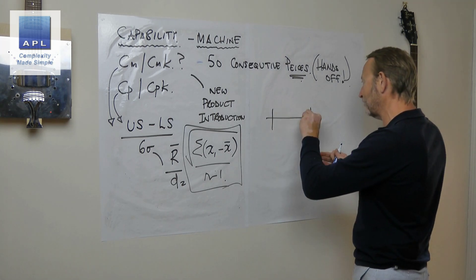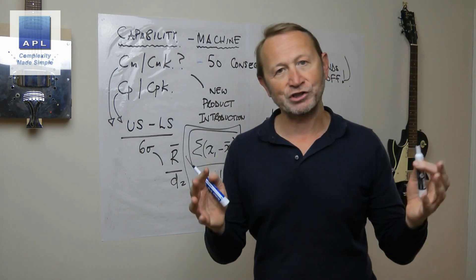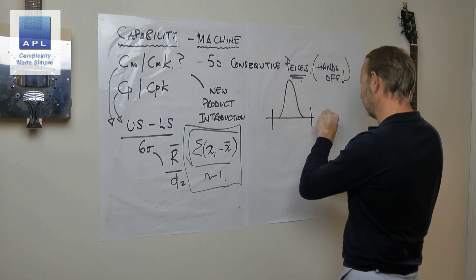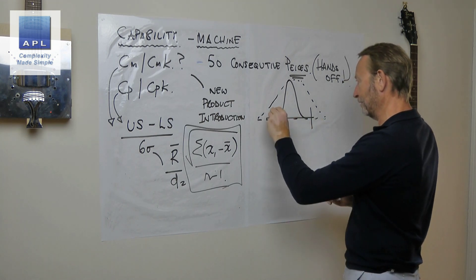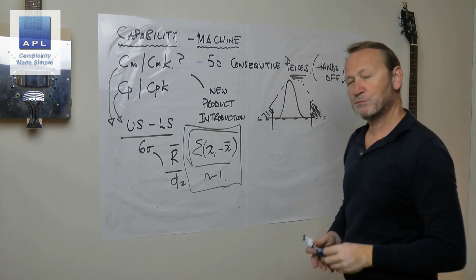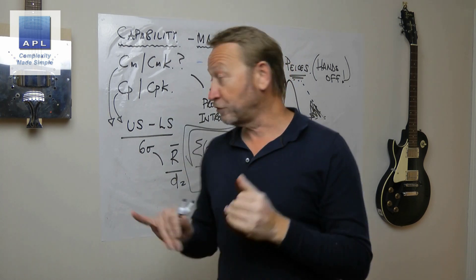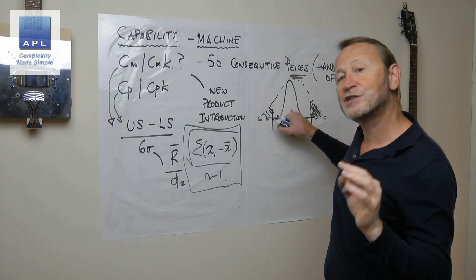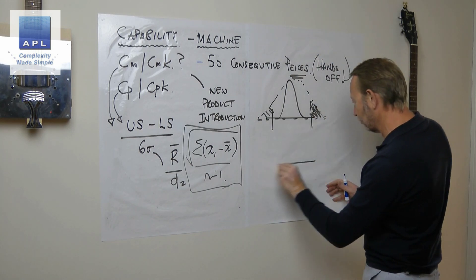When you take your hands off, you want to see something like this - the machine's got a chance. Now obviously with other variability this might move backwards and forwards, and you might end up with an ultimate long-term capability that produces defects in the tail. But at least if you've got this first capability from 50 consecutive pieces, it's telling you that you've got a chance with the machine.